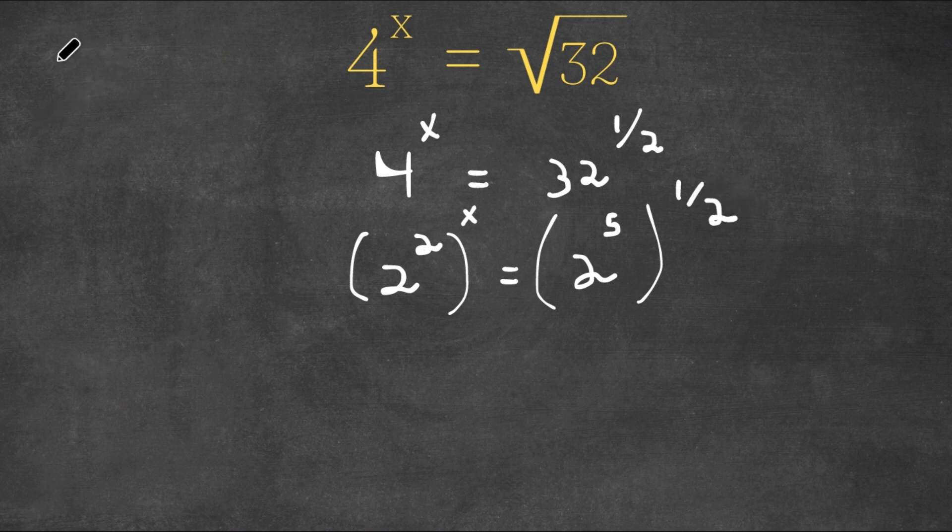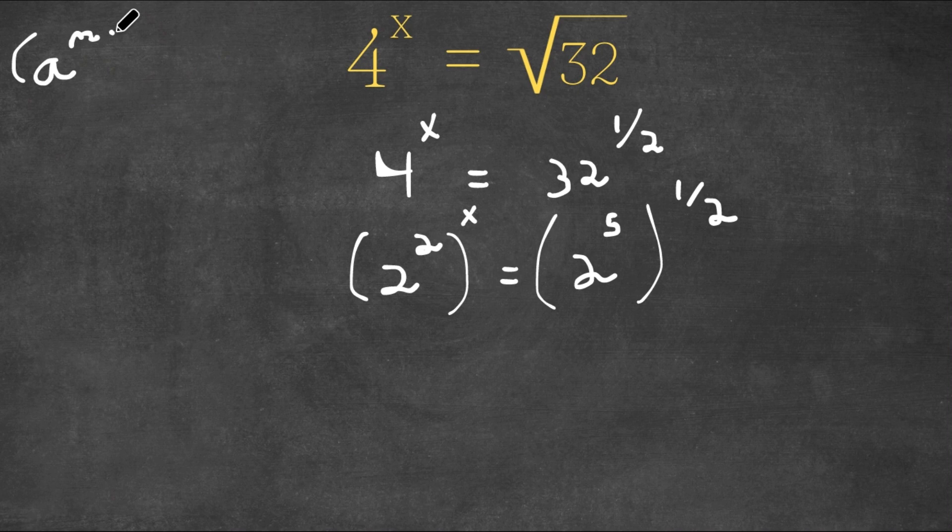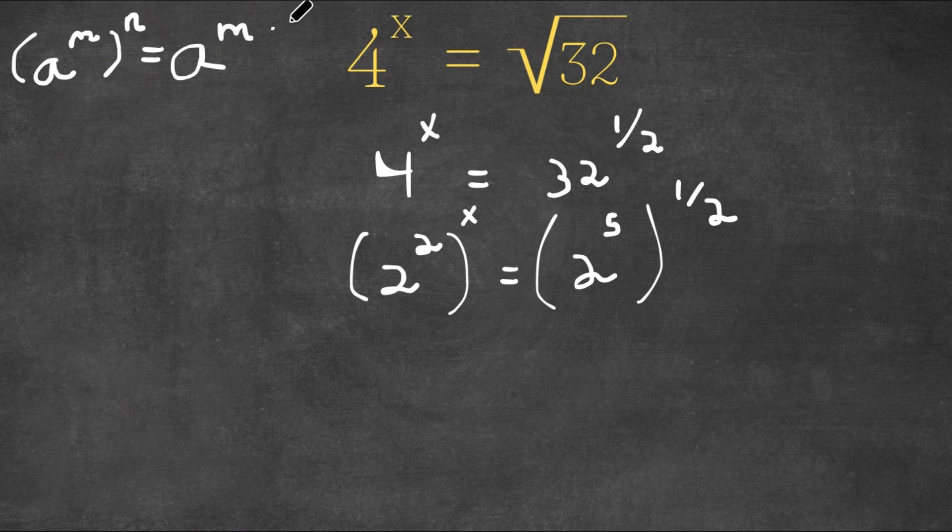Now, if we have something in the form a to the power of m to the power of n, this is actually equal to a to the power of m times n.